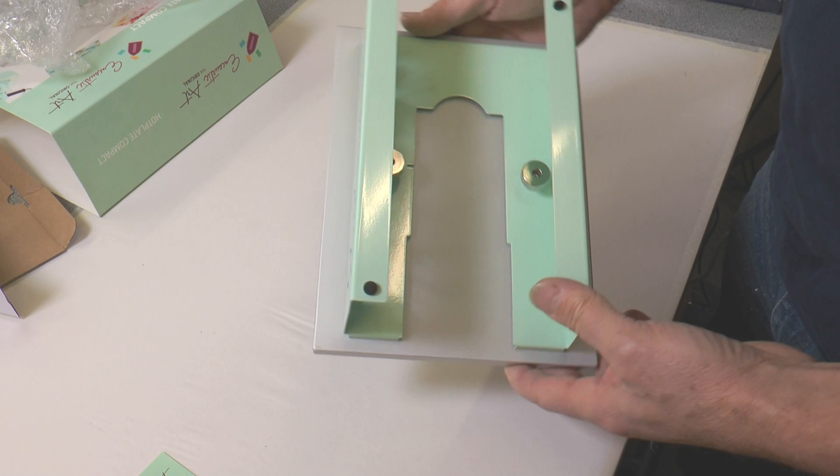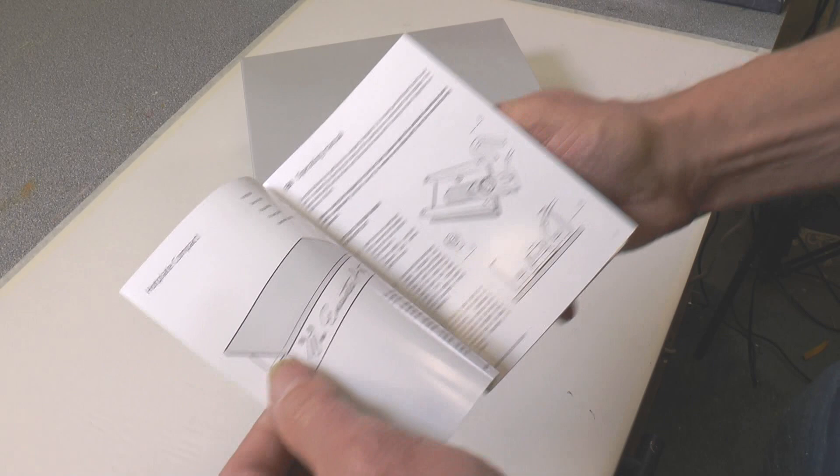Inside there are two large nuts and these are what clamp the iron into position. The little booklet is in five languages. It'll tell you everything that you need to know about fixing the hotplate together and the basics of using it.